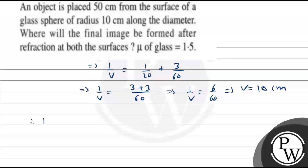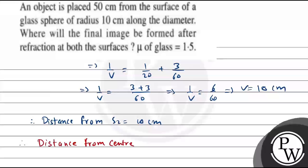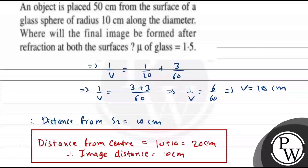Therefore, the distance from S2 is 10 cm, and the distance from the center of the sphere is 10 plus 10, which equals 20 cm. Therefore, the image is at a distance of 20 cm from the center. This is our final answer. I hope you understood it well — best of luck!